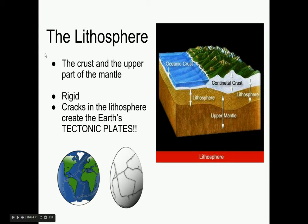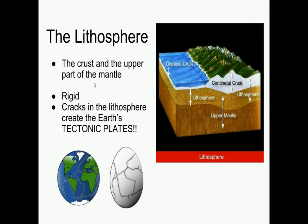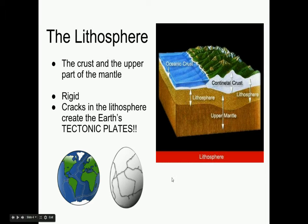There is a layer you might not know about that is so important and awesome — the lithosphere. The lithosphere is a combination, kind of a bridge between the crust and the top part of the mantle. Think of it like a hard-boiled egg: it's got that membrane attaching the shell before you get to the white. So the lithosphere is that upper edge of the mantle — it's part of the mantle but also considered part of the crust. It is very solid, made of big giant rocks, and that's what we call our tectonic plates.